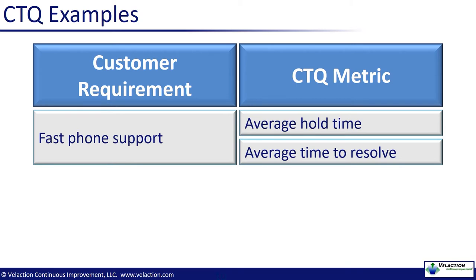The bottom metric may be better when your customers just need a quick answer. Be careful though. All metrics can work against you if they drive the wrong behaviors, especially so when they are critical to quality. In this case, it is not a stretch to think that a speedy resolution metric might inspire a customer service agent to rush a customer off the phone. Some customers may feel slighted by this. That is why it is incredibly important to get your CTQ metrics correct.